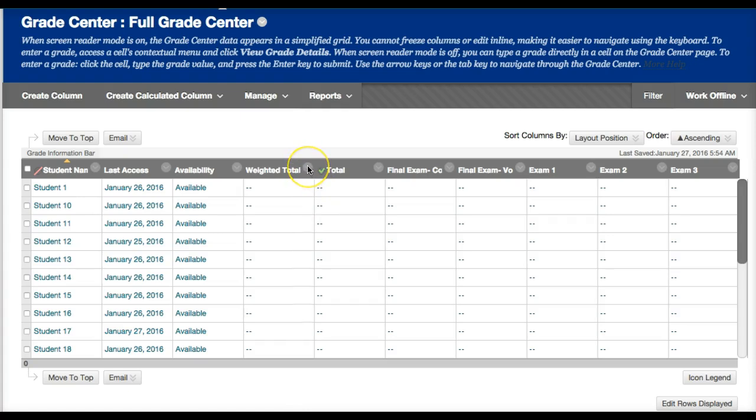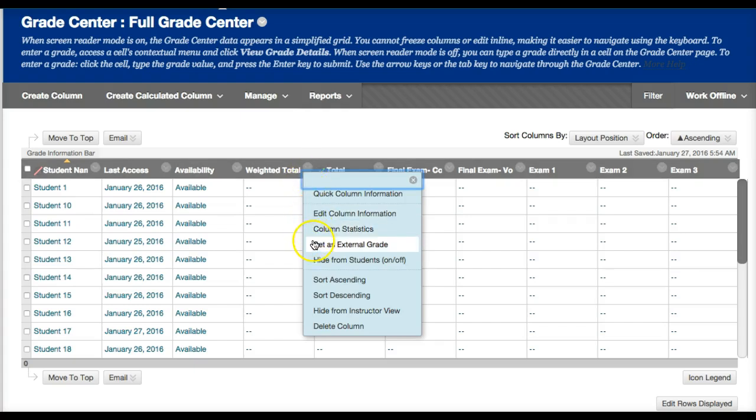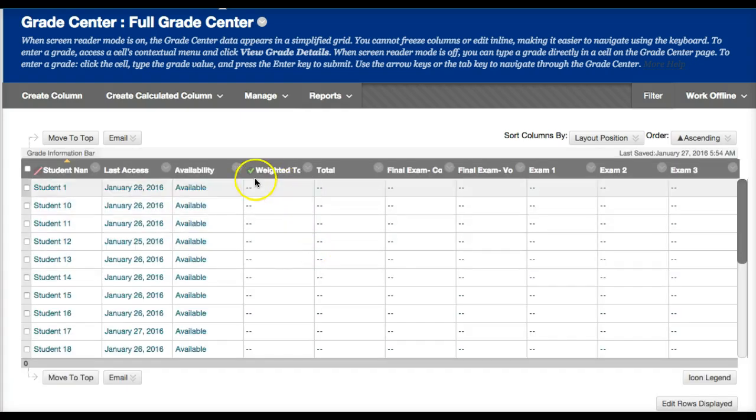You want to make the weighted total the external grade. You go to the right arrow, go down to set as external grade. You can see that the green check is now at weighted total.